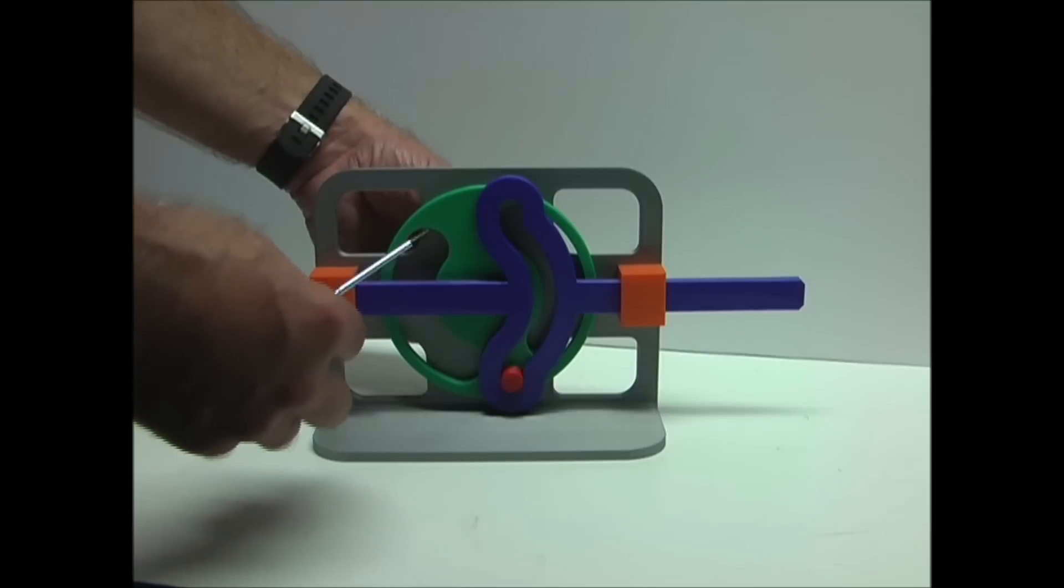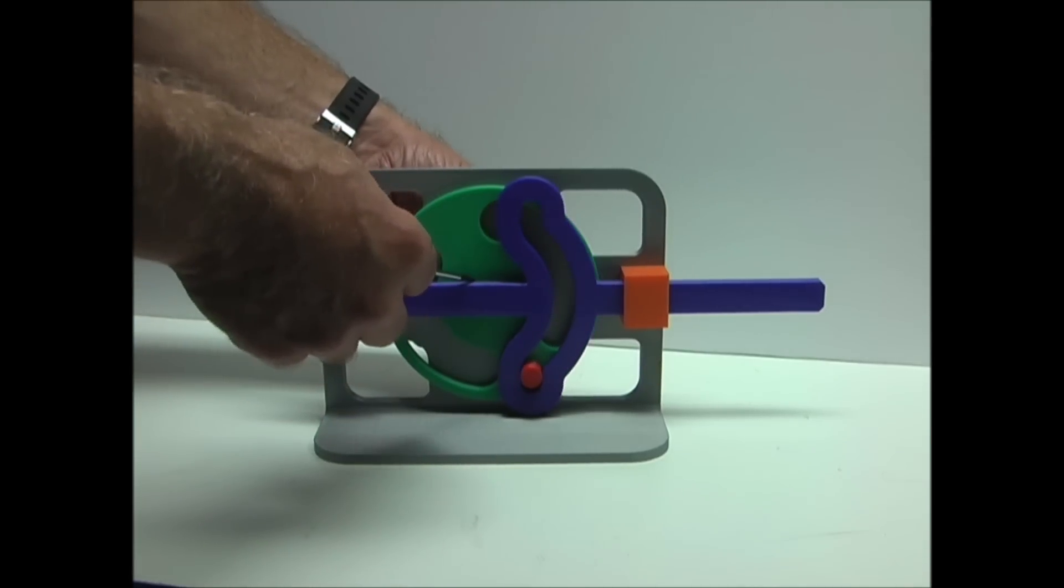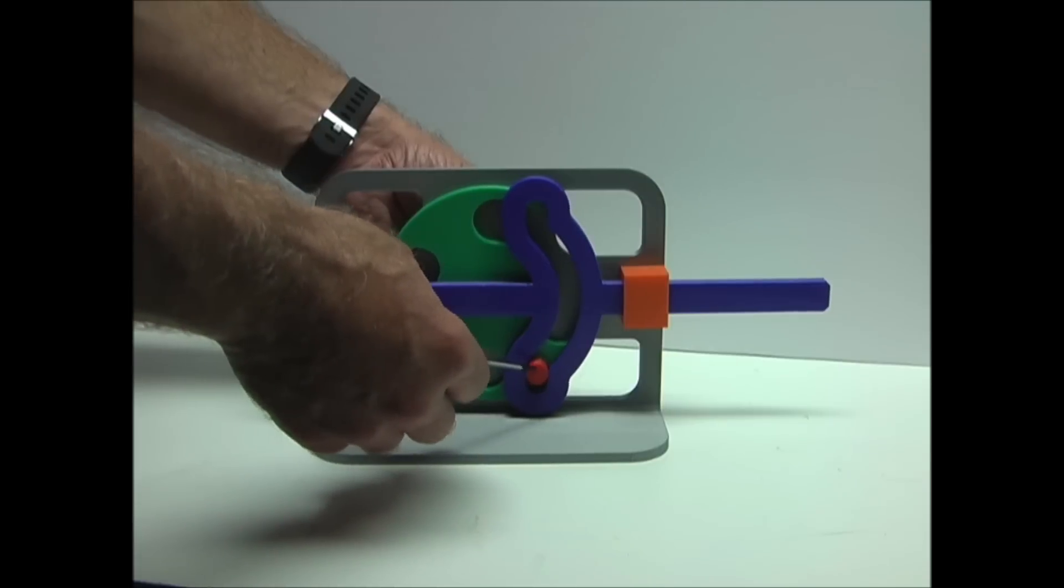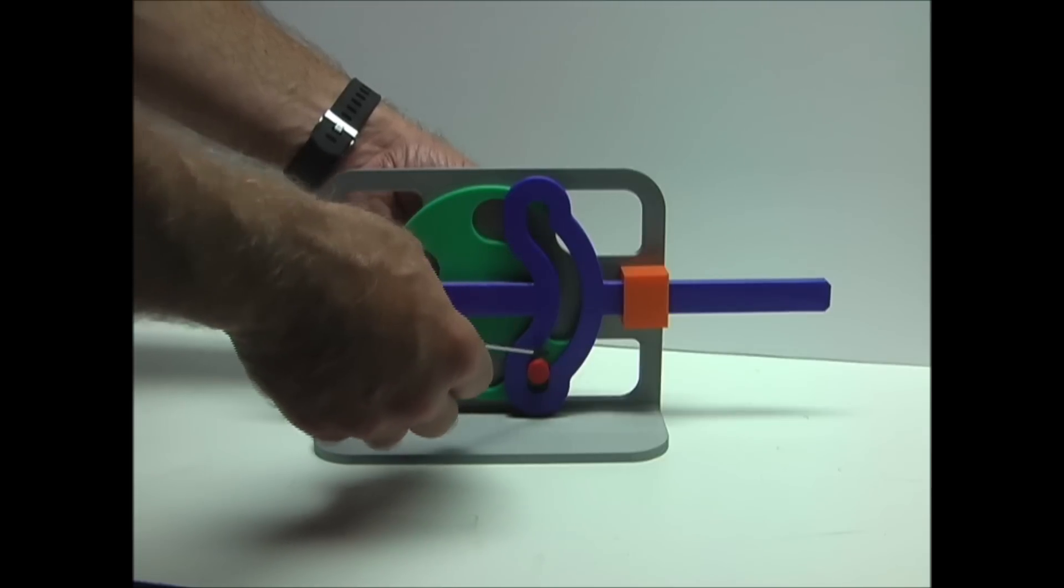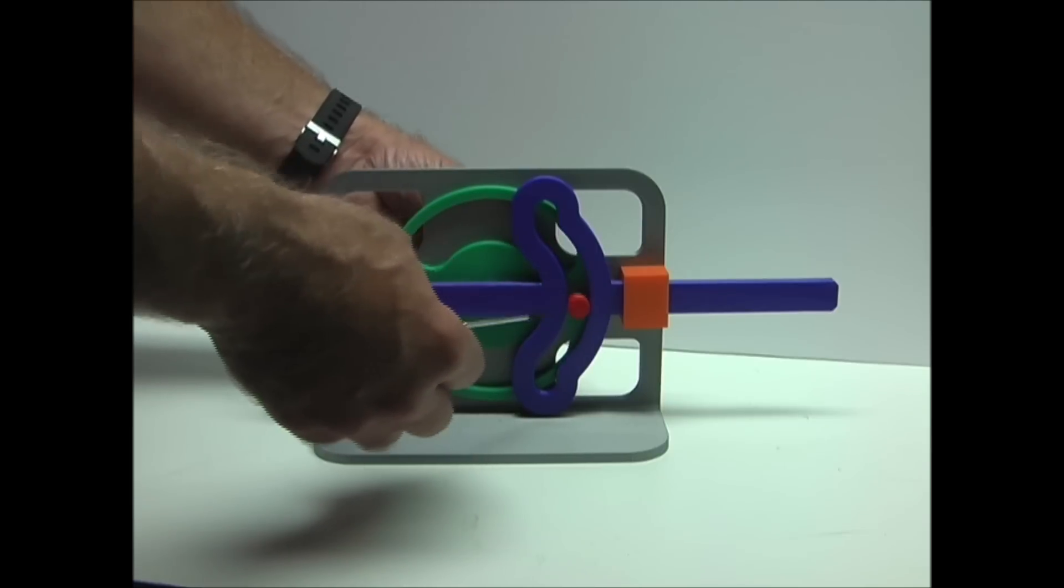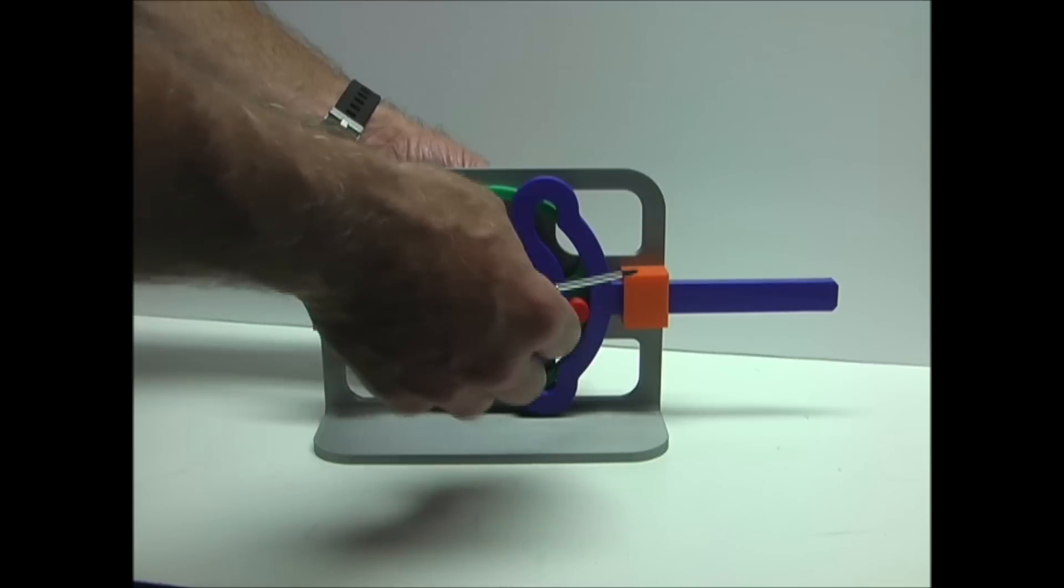This is another scotch yoke mechanism. It also has a wheel that rotates about the center axis with a pin that's offset from the center. There's also a slider, but a portion of this slider is concentric with the wheel. So as the pin moves through this part of the slider from here to here, there's no lateral movement in the arm. This is called dwell.